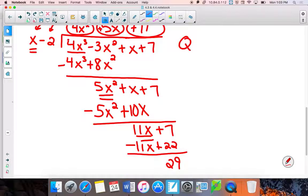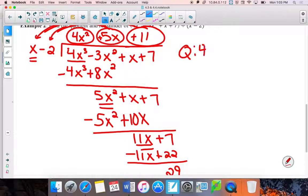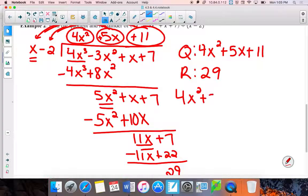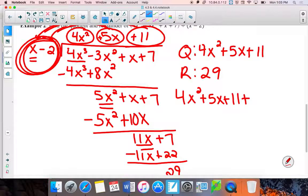I know that my quotient is whatever was at the top of that division bar. The quotient is 4x squared plus 5x plus 11 with a remainder of 29. I can't go into 29 anymore. You might see that written as 4x squared plus 5x plus 11, your quotient, plus your remainder divided by what you were dividing by, this x minus 2. So plus 29 divided by x minus 2. Just in case my math lab has it a little bit weird so you can recognize that.